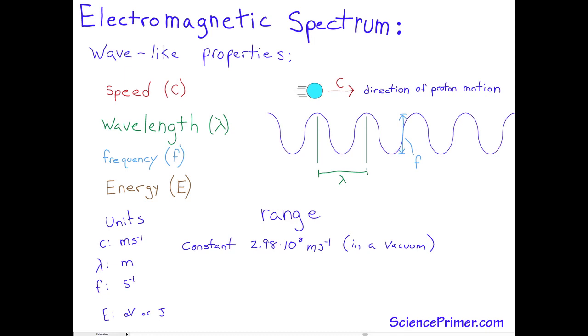Wavelength, frequency, and energy values vary over huge ranges. Wavelengths range from tens to hundreds of meters for radio waves, down to less than 1 picometer, or 10 to the minus 12 meters for gamma rays.